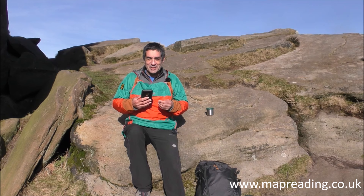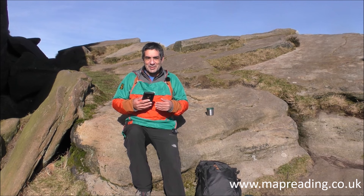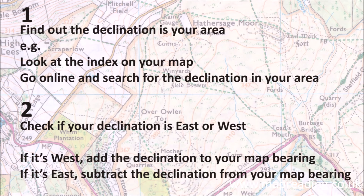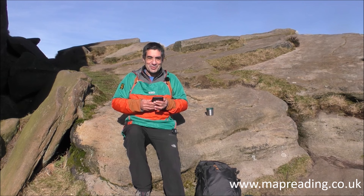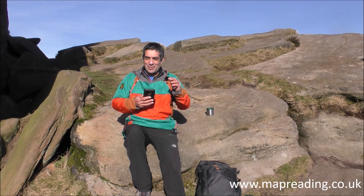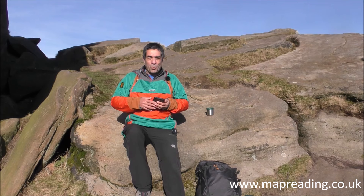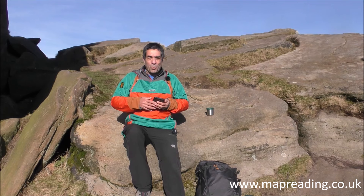Let's go back over what you need to do to deal with declination. If you're using a map and a compass and you want to do it accurately, you are going to have to do this. First, go online and find out what the declination is in the area you're going to be walking in. If your declination is west, add the declination to any bearing you take from a map. If your declination is east, subtract it. If you use your compass to take a compass bearing, then you do exactly the opposite. That's it - it's not difficult, it's really simple. Check the declination, find out if you're east or west, and whether to add or subtract. Now I'm going to walk over to Carl Wark - let's see if my compass work is as good as I hope it is.